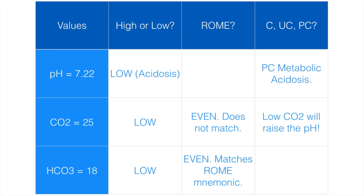The next example: the pH is 7.22, which is low — that's a state of acidosis. The CO2 is 25, which is low. The bicarb is 18, which is low. So all of them are low. Now is it respiratory or metabolic? Let's go through the ROME mnemonic. pH and CO2 are both low — they're even, so that doesn't match respiratory opposite. But the bicarb and pH match; they're both low, so we know that's a metabolic issue — metabolic acidosis. Now is it compensated, partially compensated? It's partially compensated just for the fact that the CO2 isn't normal. All values are abnormal, so that means it's partially compensated. That CO2 is trying to bring the pH up, but it hasn't yet.